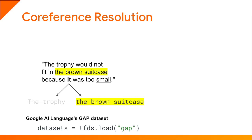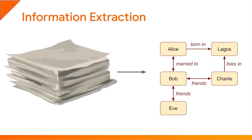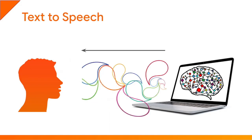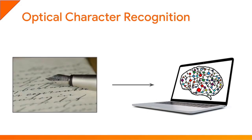There are many other NLP tasks. Information extraction is about reading text and extracting structured information from it, typically in the form of a graph — for example, 'Alice was born in Lagos, she's married to Bob.' Speech-to-text is also part of NLP: you speak to the computer and it writes down what you're saying. The reverse is also considered NLP — the computer reads text out loud — and we're all getting used to these applications in our lives, but just a few years ago it was science fiction. And lastly, Optical Character Recognition, or OCR, is also part of NLP — building a system that can read written text, whether handwritten or printed. Over the years, the field of NLP has split into many specialized subfields.